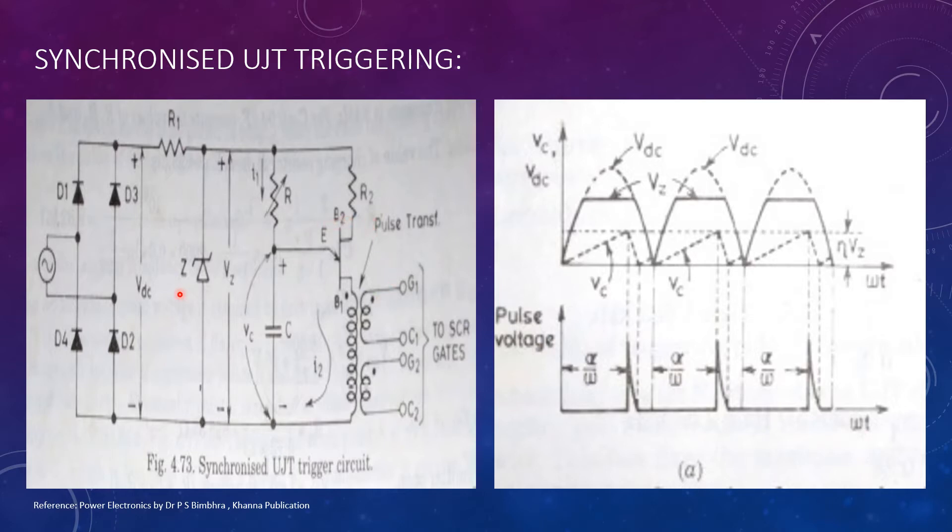Zener diode Z functions to clip the rectified voltage VDC to a standard level VZ, which remains constant except near VDC zero.